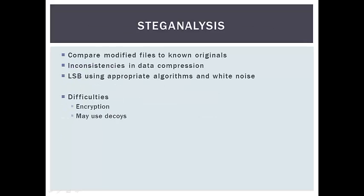Steganography detection, or steganalysis, is the detection of messages hidden using steganography. The simplest method of detecting steganography is comparing modified files to known originals. This method only works if the investigator has both copies of the files. If there are differences, they can assume steganography may have been used. Another thing investigators can look for is inconsistencies in data compression. Investigators can also detect if the least significant bit method has been used by using algorithms and looking in the white space of the file.